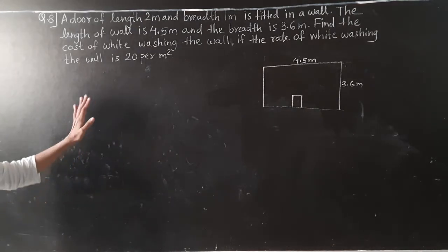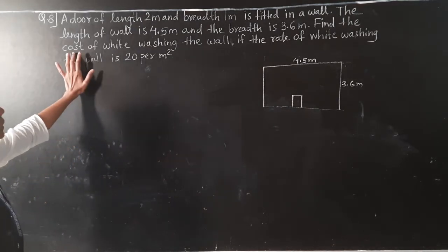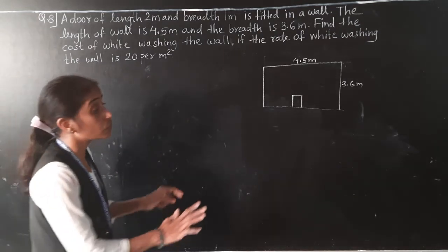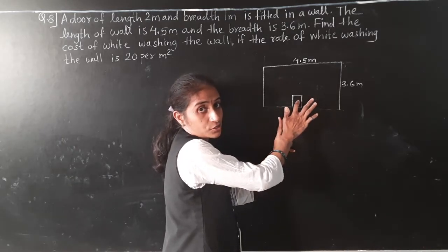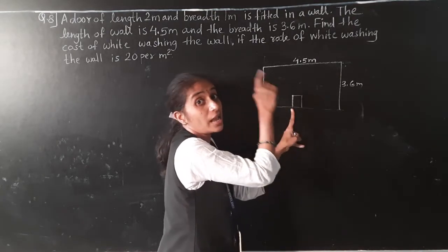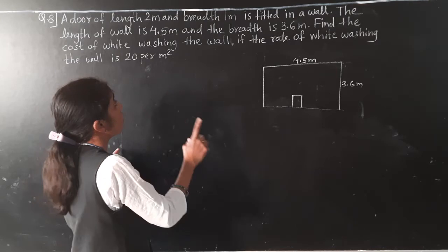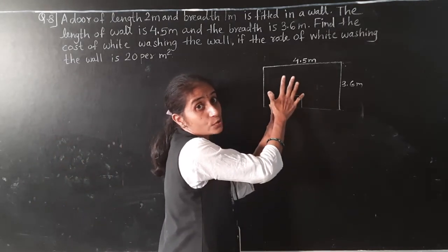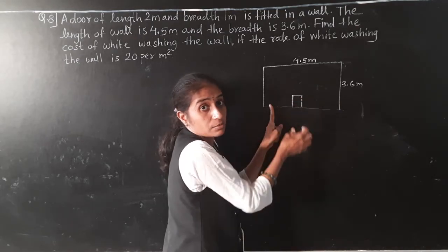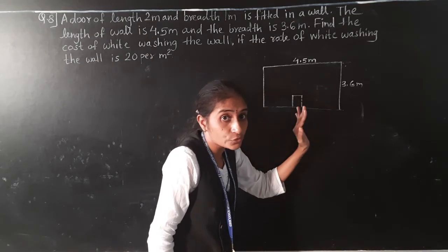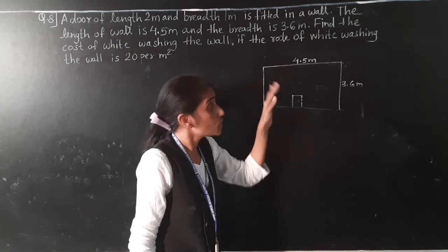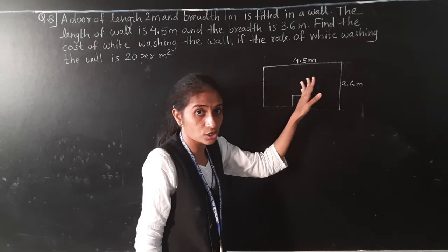Find the cost of white washing the wall if the rate of white washing is rupees 20 per meter square. We have to paint the wall but not the door. So we will find the area of the wall, subtract the area of the door, and then calculate the cost.